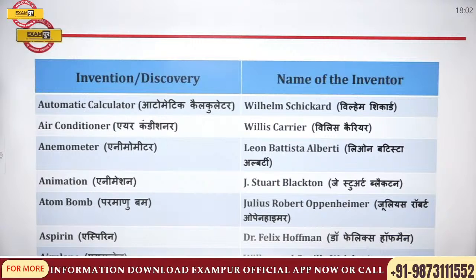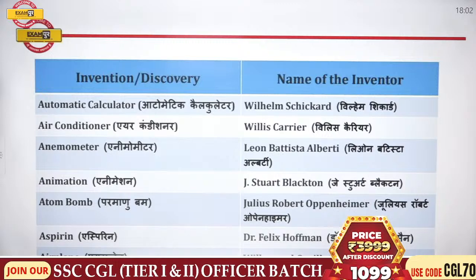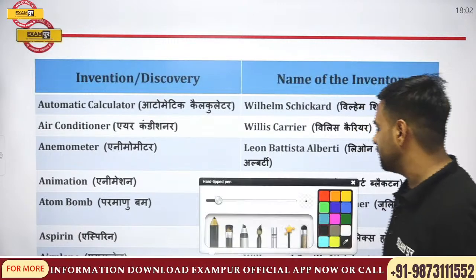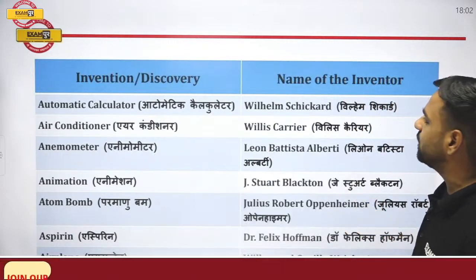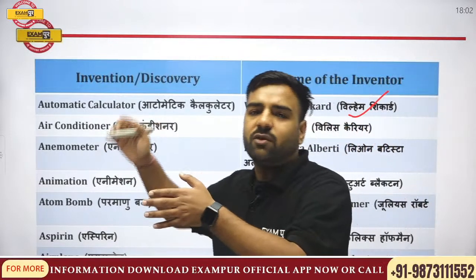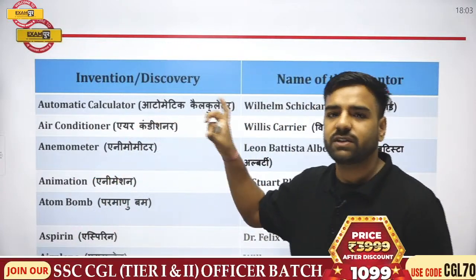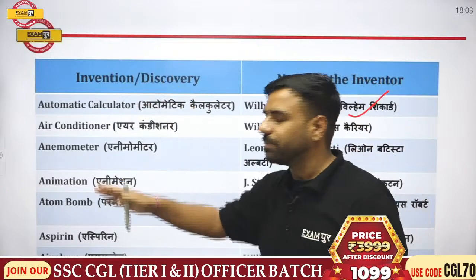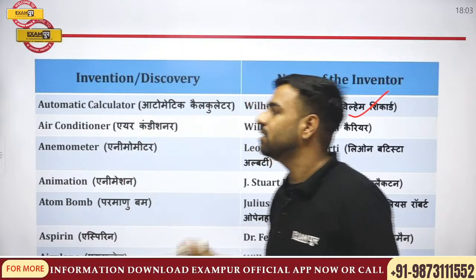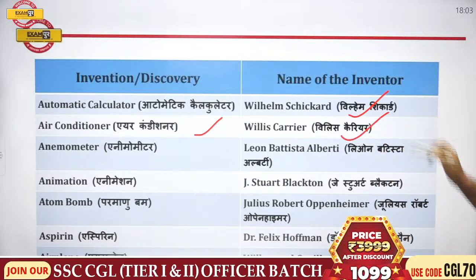We will start with the automatic calculator, discovered by Wilhelm Schickard. Then comes the air conditioner, which was discovered by Willis Carrier. We will complete this section and then start with the tricks we didn't finish yesterday.